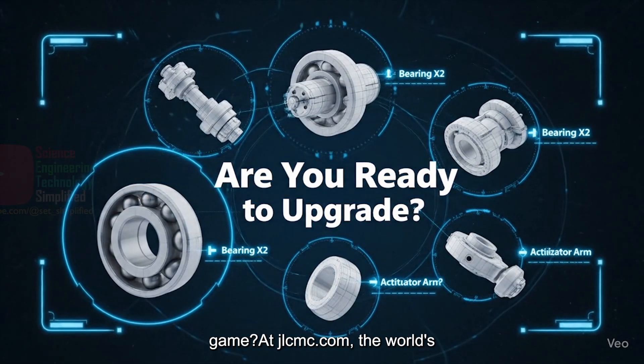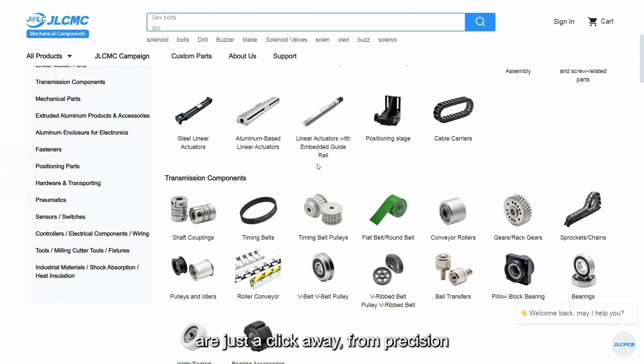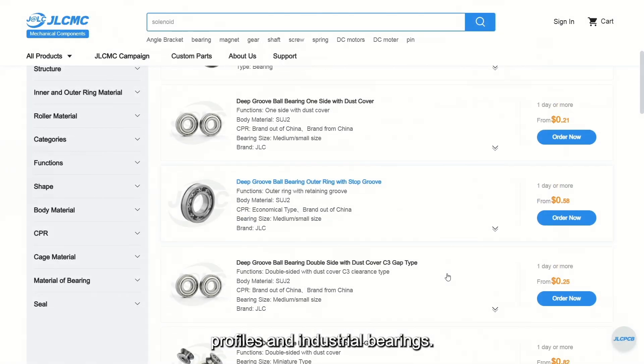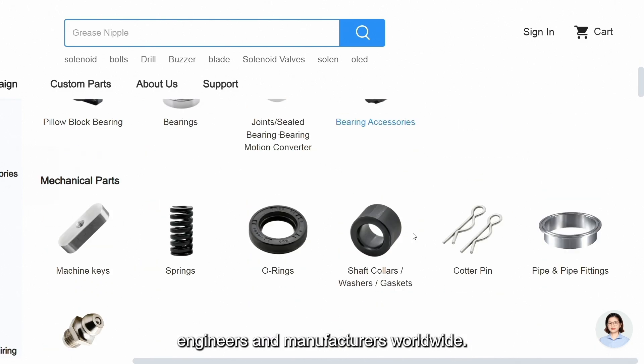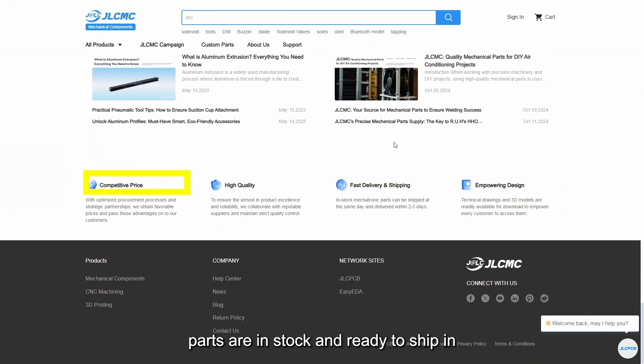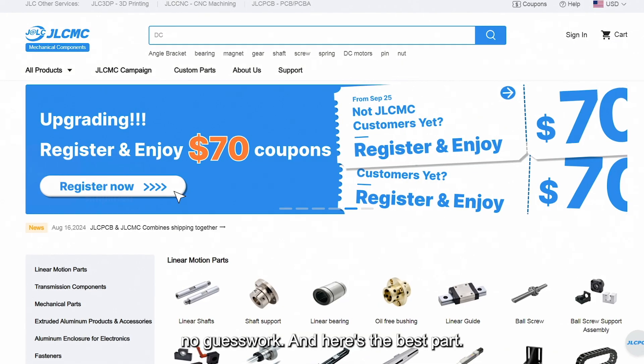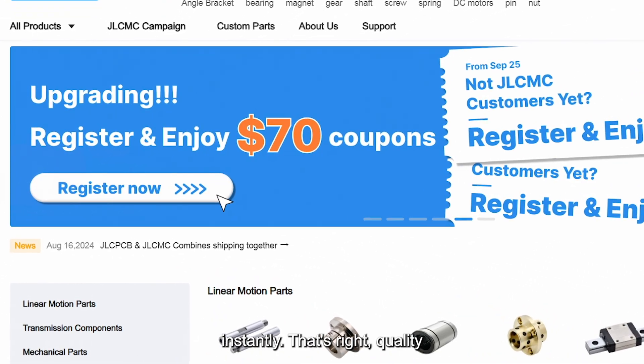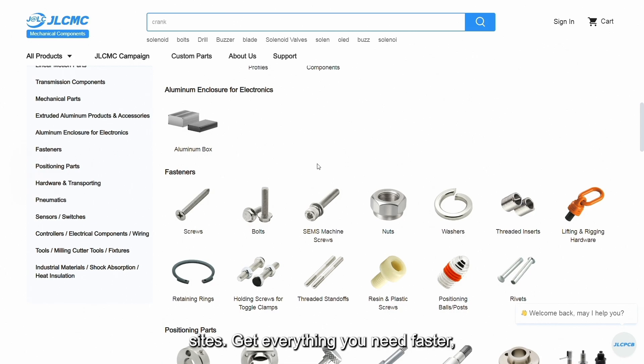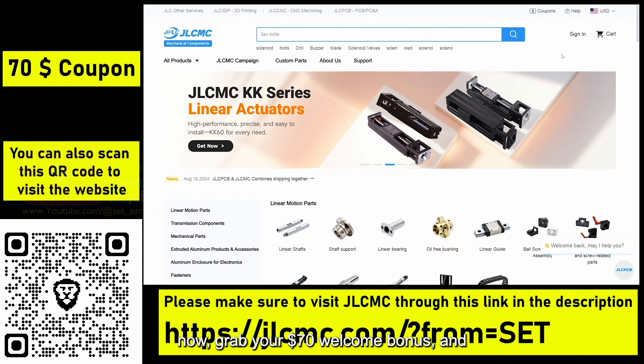Are you ready to upgrade your engineering game? At JLCMC.com, the world's fastest-growing mechatronic components marketplace, the most in-demand products are just a click away. From precision linear actuators, ball screws, and timing pulleys, to couplings, aluminum profiles, and industrial bearings. JLCMC is the go-to source for makers, engineers, and manufacturers worldwide. Need something fast? Over 600,000 parts are in stock and ready to ship in 24 hours. And every part comes with free 2D, 3D CAD downloads. No delays, no guesswork. And here's the best part. New users get up to $70 in coupons instantly. That's right, quality components plus real savings from day one. Don't waste time searching a dozen sites. Get everything you need faster, cheaper, and smarter at JLCMC.com. Sign up now, grab your $70 welcome bonus, and start building smarter.